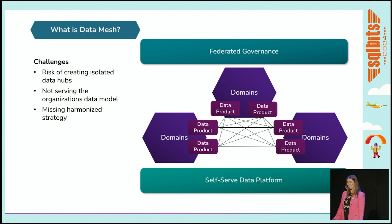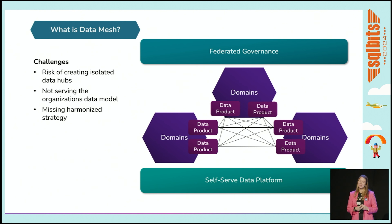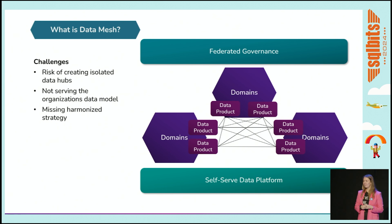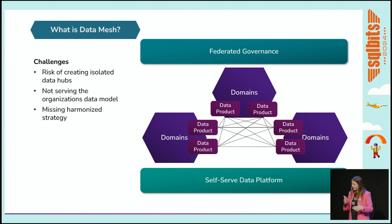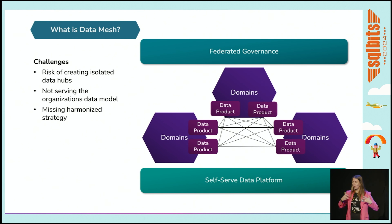The challenges: there's a huge risk of creating isolated data hubs because each domain can become so autonomous that they build things that aren't cohesive with your entire data ecosystem or organizational data model. You might end up with different sources of truth and miss a harmonized strategy because everyone goes in their own direction. That's why I stress the centralized part — you need a central force ensuring everyone works in the same direction.